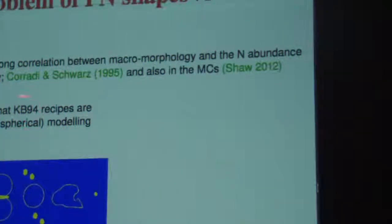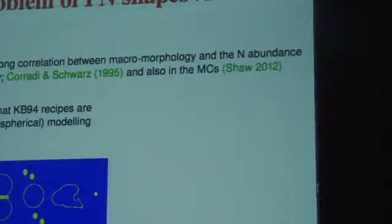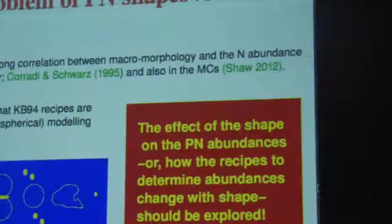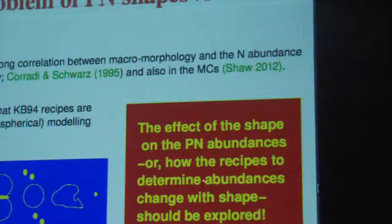If you take the ICF scheme derived under the consideration of spherical symmetry, and also consider that at most only about 20% of planetary nebulae are round, it is clear that you need to take into account the effect of morphology. This effect should be explored to get better abundance estimates for these objects.